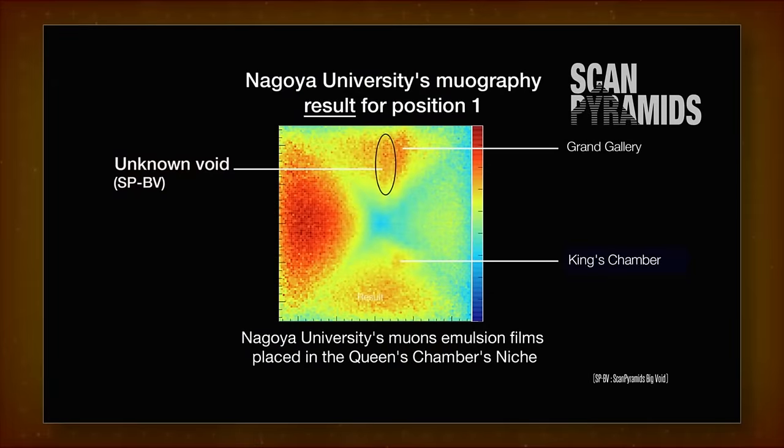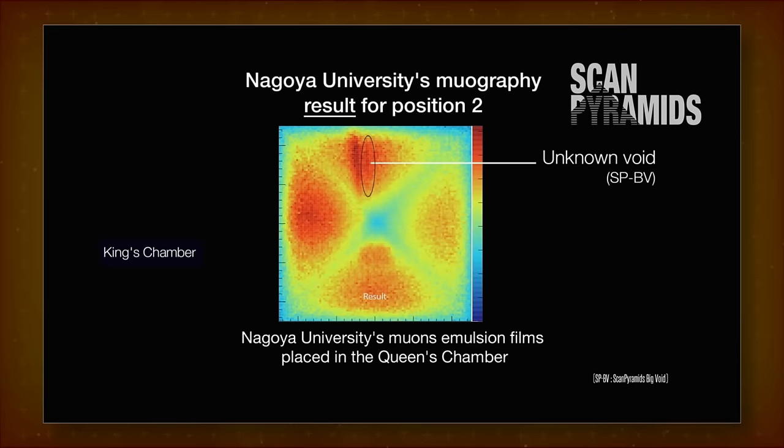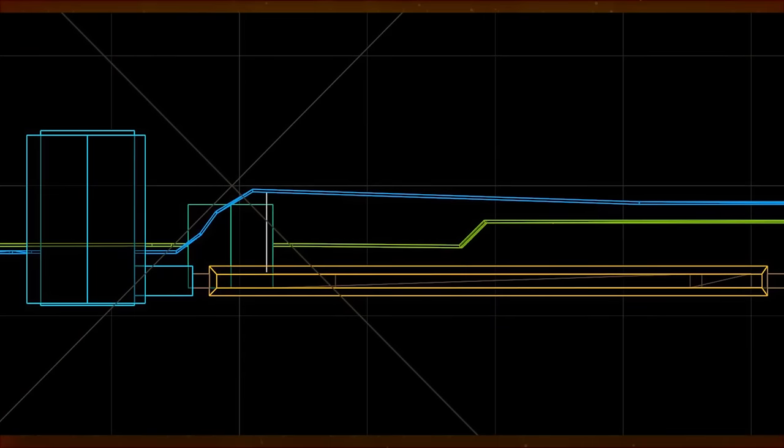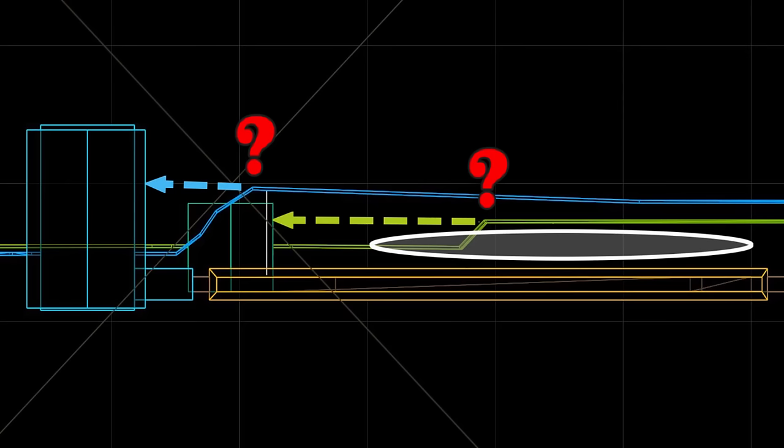This could argue against the proposal of the voids being a relieving space for the Grand Gallery, as it then would be located above the gallery, not to the side. These odd turns raise another question. If you want to avoid something here, why have the shafts turn at all as they approach the chambers, instead of just having them follow the shortest possible straight path? We'll propose an answer later.